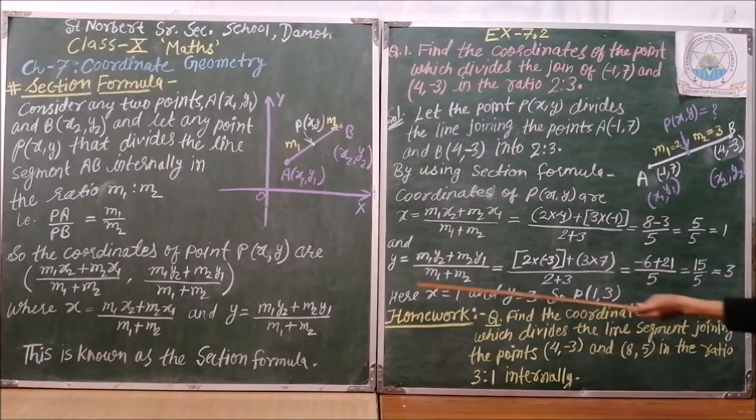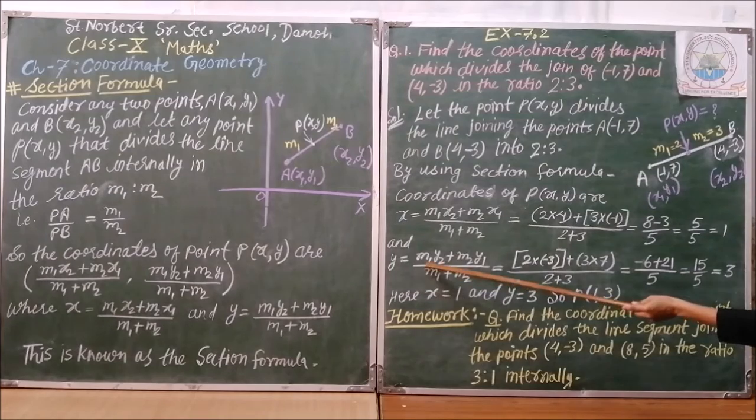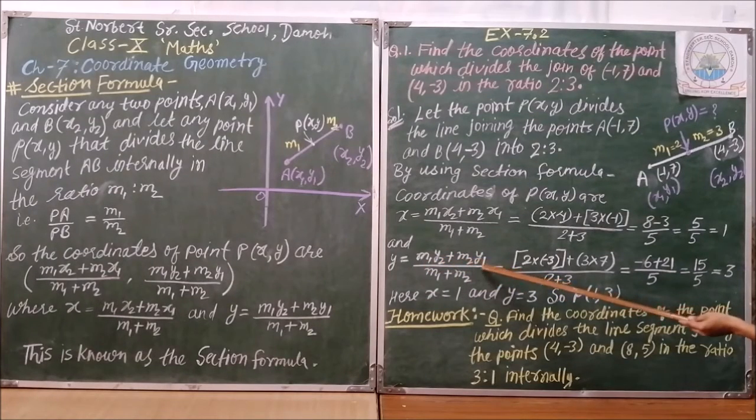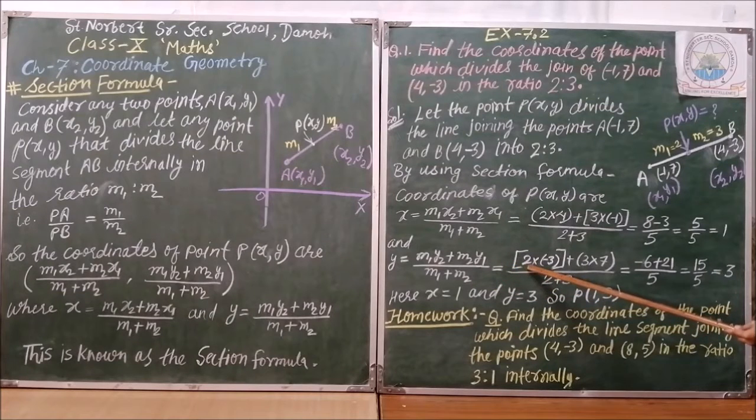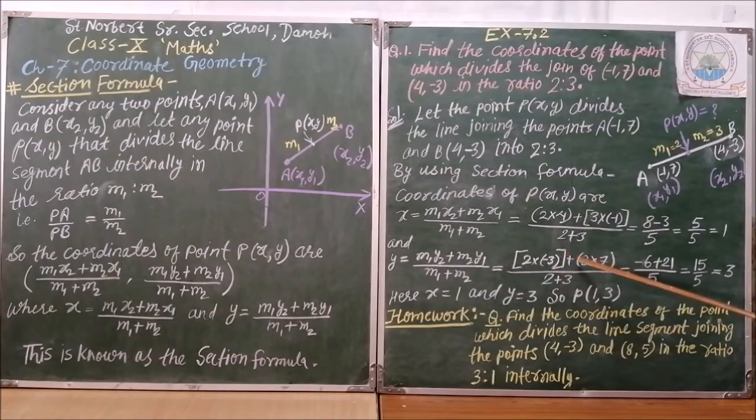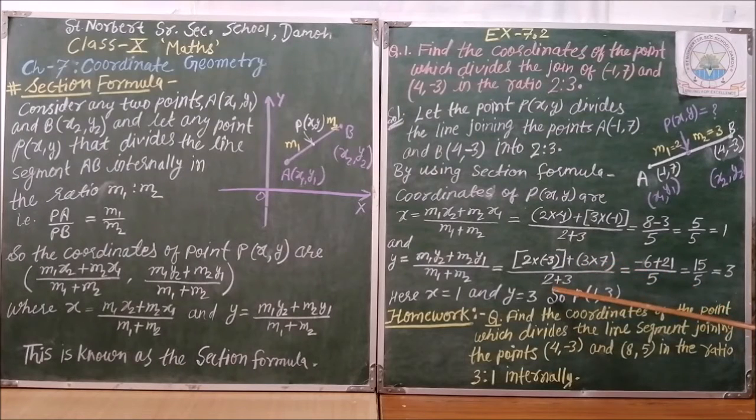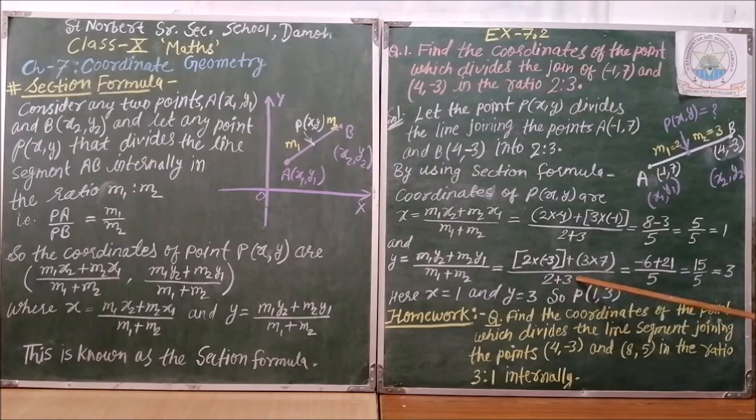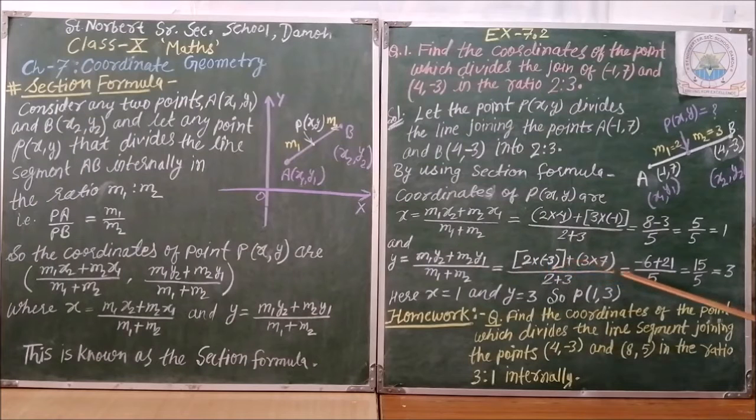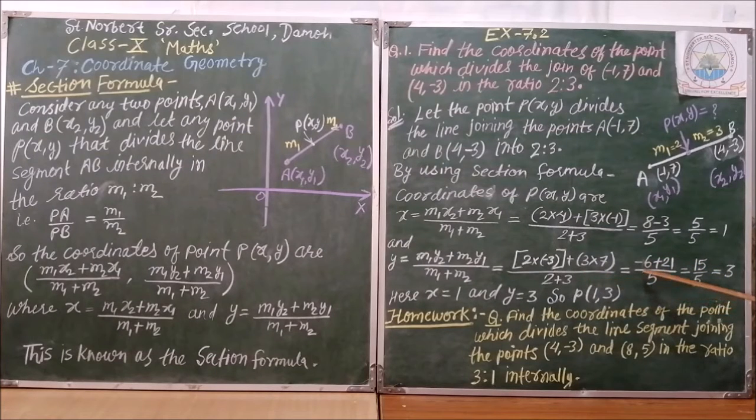Now, we will find y. Y is M1y2 plus M2y1 upon M1 plus M2. So, we will keep the value M1 is 2, y2 is minus 3, M2 is 3, y1 is 7 and M1, M2, 2 and 3. So, we will solve it 2 into minus 3 become minus 6, 3 into 7 is 21 and 2 plus 3 is 5. So, minus 6 plus 21 will give you plus 15 and upon 5 will be as it is 15 upon 5 is 3.